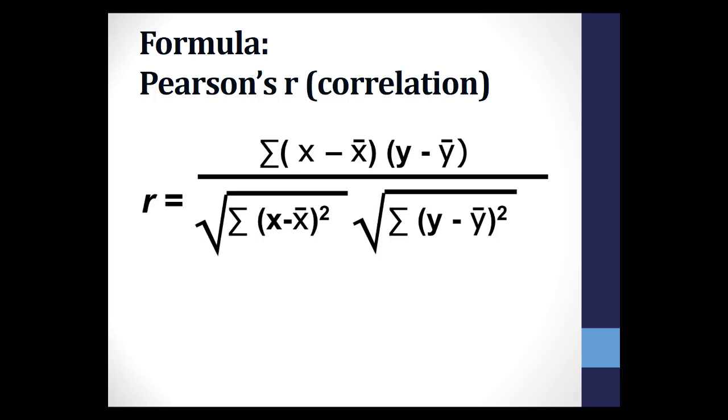That takes us to the formula for Pearson's R. Notice that you really only need to know the scores for each group and the means for each group, and degrees of freedom, which is the number of observations minus two.